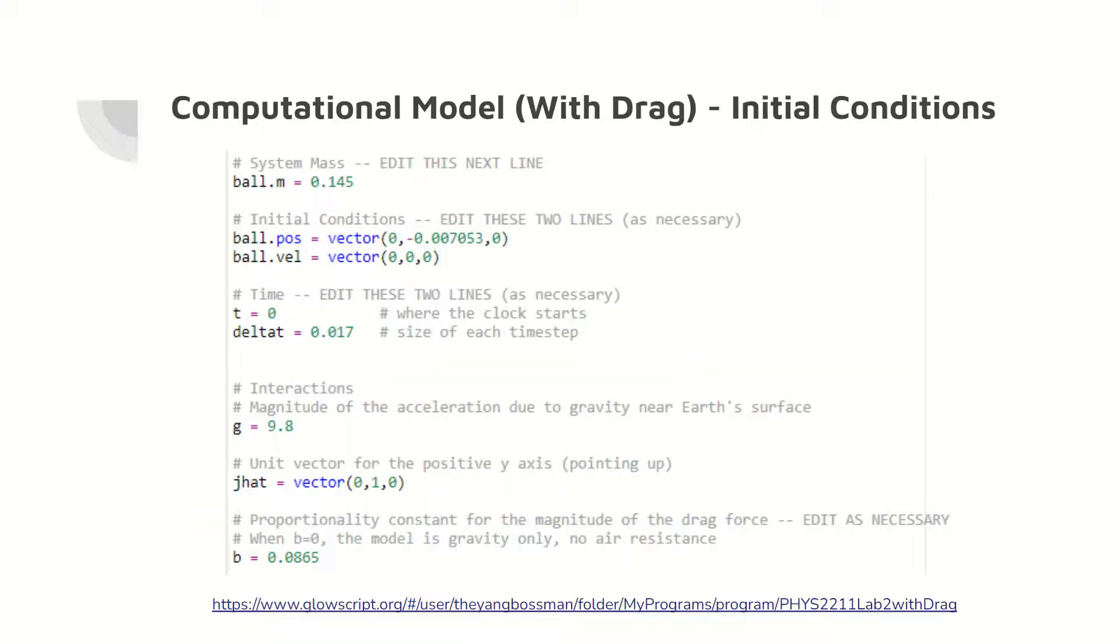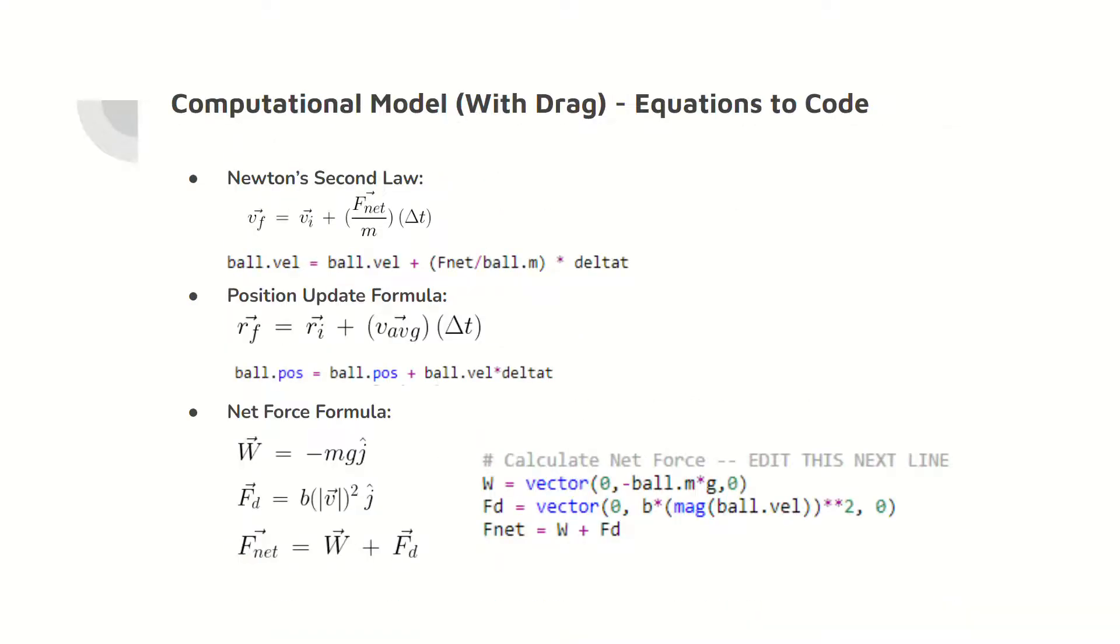Here are the initial conditions of the computational model that considers the drag force. Notice that the coefficient of drag, b, equals a non-zero positive number, 0.0865. The model that considers the drag force has a net force that is the sum of the force due to gravity on the ball, w, and the drag force, fd. The velocity update formula and position update formula as code are also included.